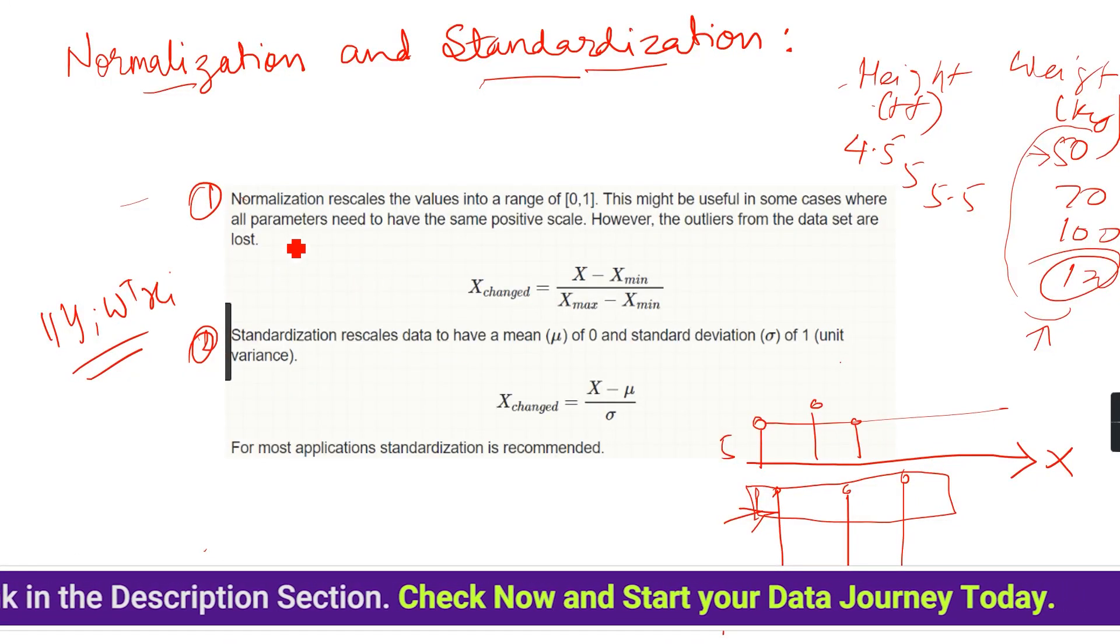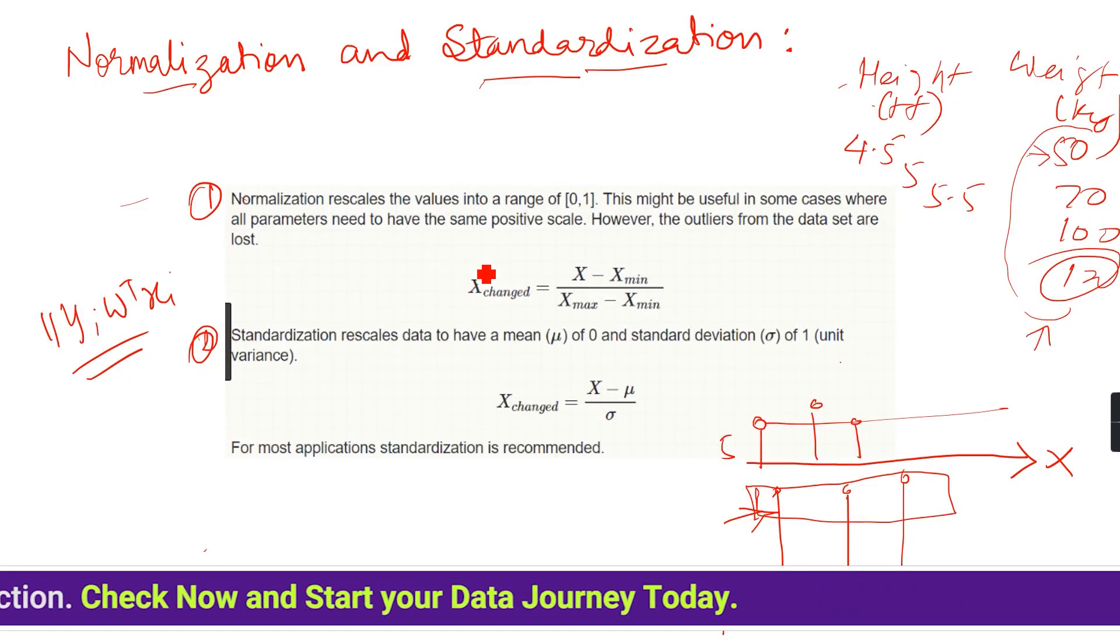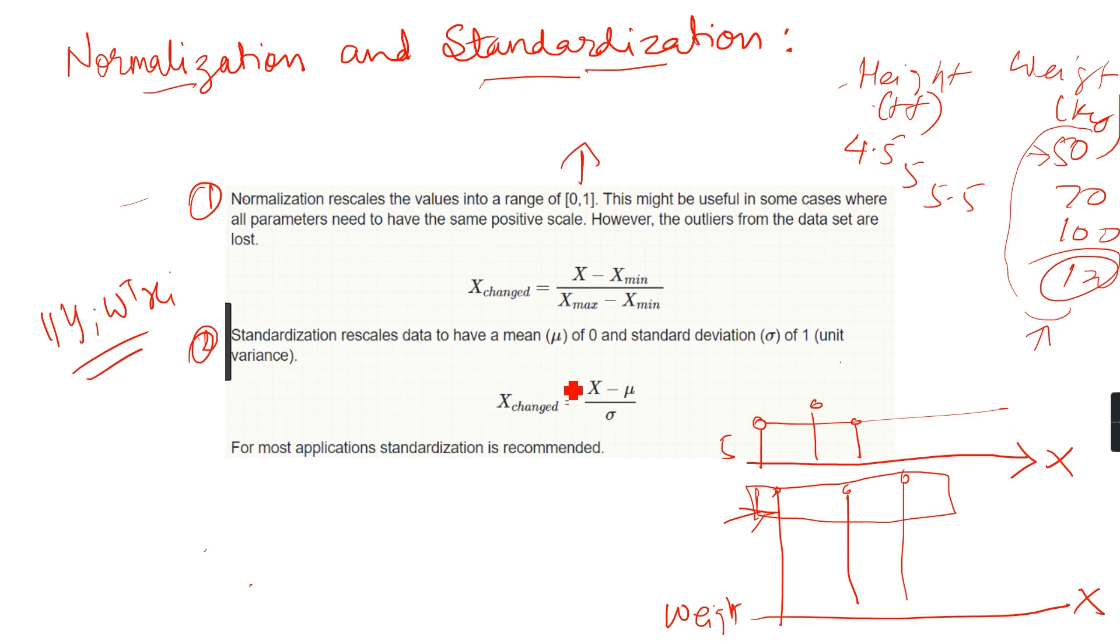Normalization will change my variables in the range of 0 to 1, while standardization will change my features to a normal distributed curve—a normal distribution which has mean at 0 and standard deviation as 1.